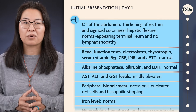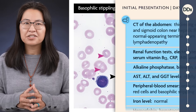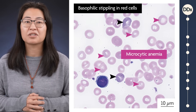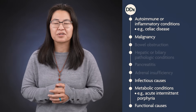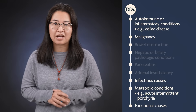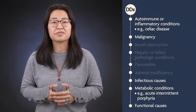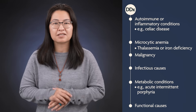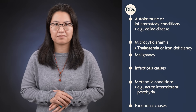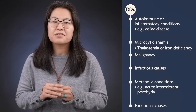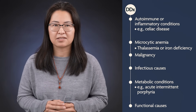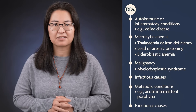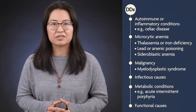The abnormalities on CT warrant endoscopic investigation. The patient's labs are notable for a microcytic anemia with immature red blood cells, basophilic stippling, and mildly abnormal liver enzymes. Elevated ferritin, iron, and transferrin saturation are not consistent with iron deficiency. The normal CRP level makes an inflammatory cause of anemia less likely, although it does not rule it out. In a patient of South Asian ancestry, thalassemia should be considered. However, that would not explain his abdominal pain. Basophilic stippling in red blood cells is suggestive of impaired erythropoiesis and is associated with lead and arsenic poisoning, sideroblastic anemia, myelodysplastic syndrome, and thalassemia.